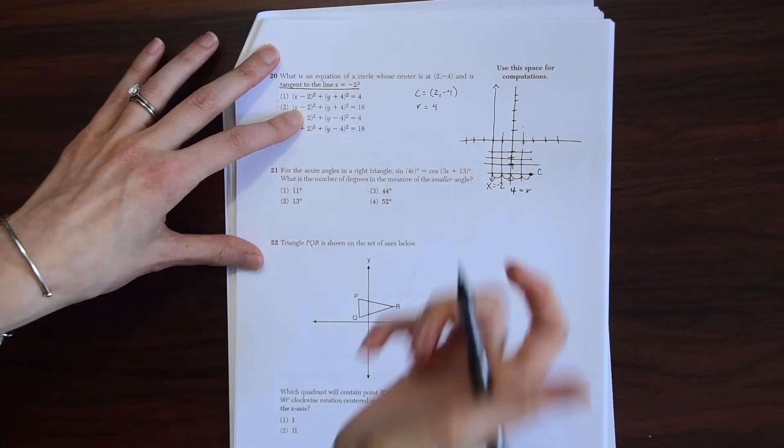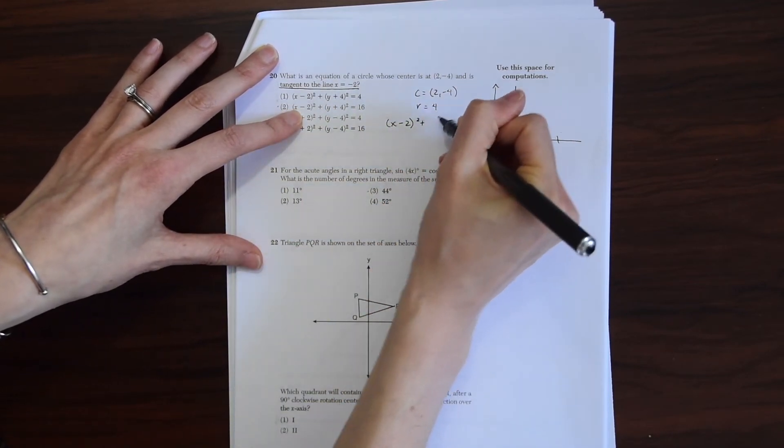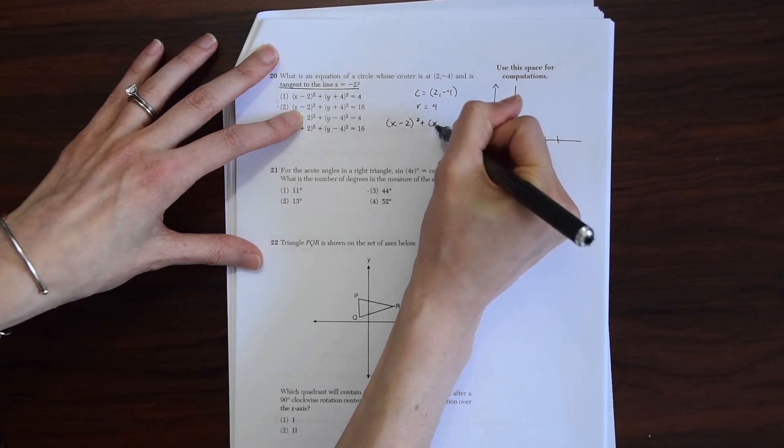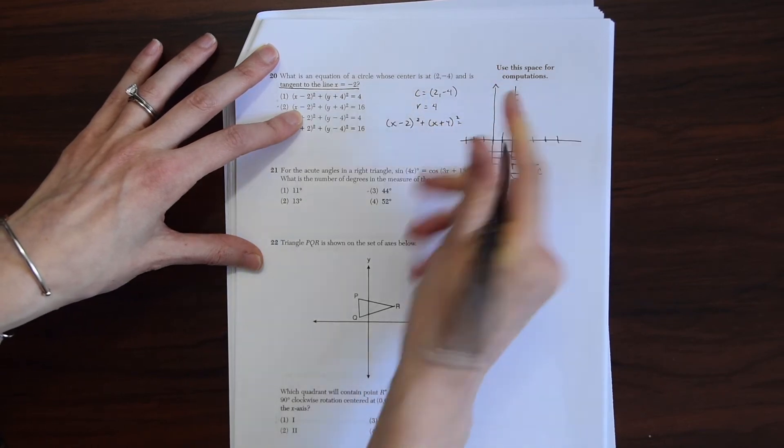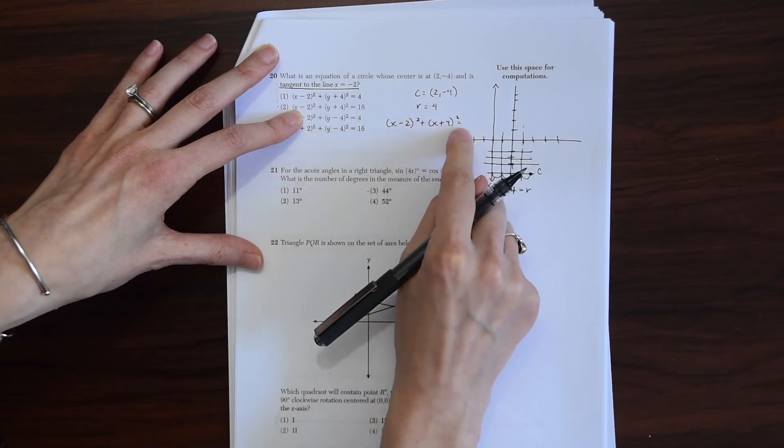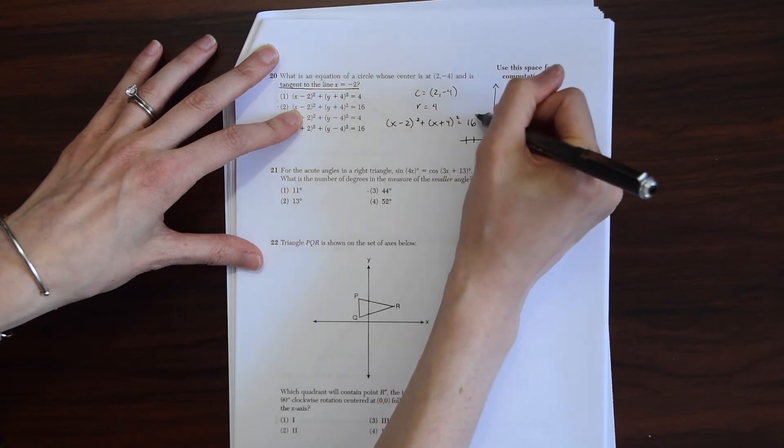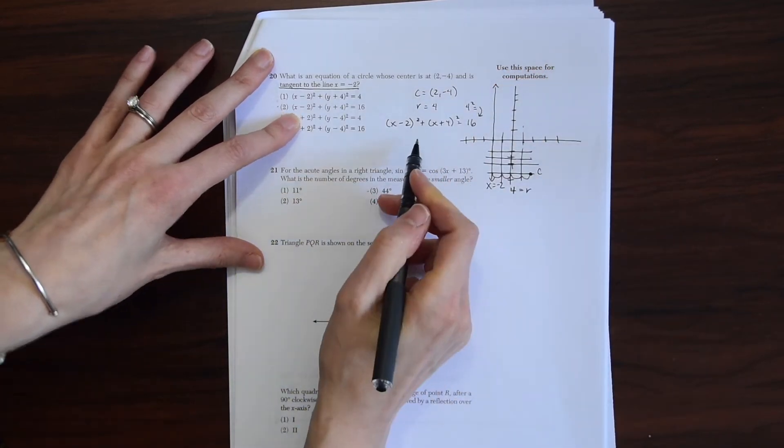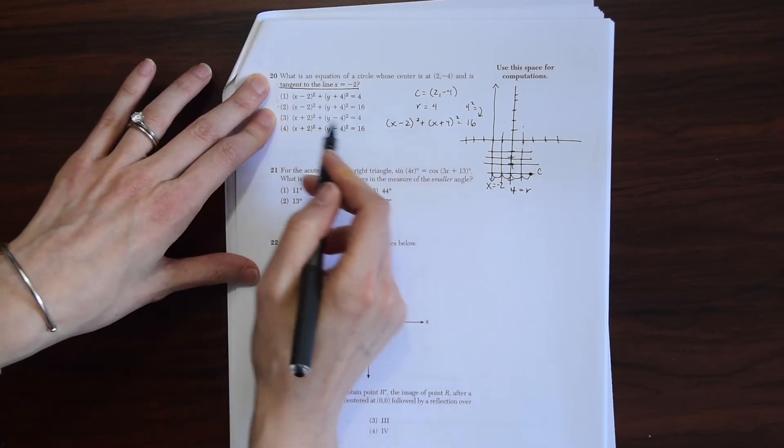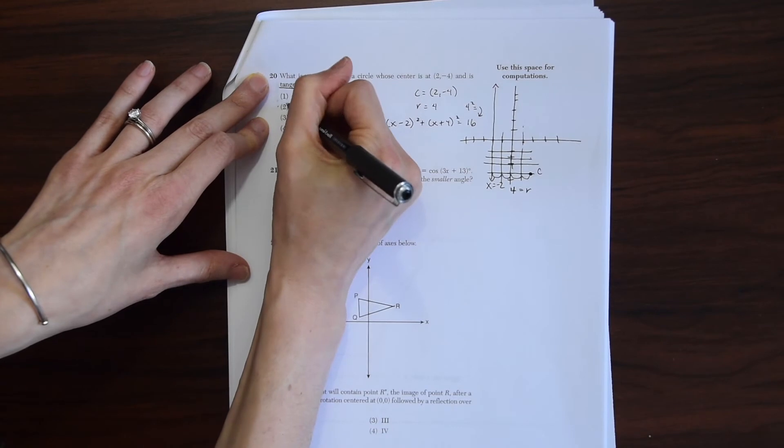So now we can just make our equation. x minus 2 squared plus, just getting this from the center, y plus 4 squared. And then to get the radius, we're always going to square the radius for the number here. So 4 squared is just going to be 16. So now we just need to find the right answer choice. We have x minus 2 squared plus y plus 4 squared equals 16. So that's choice 2.